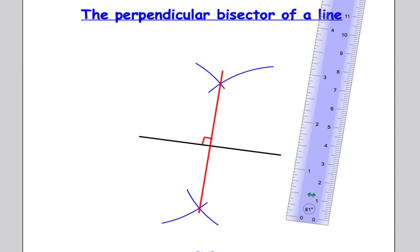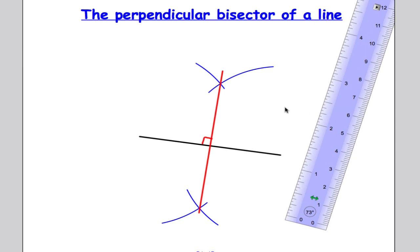And that is how you construct a perpendicular bisector of a line. That's all there is to it. Thanks for watching and we'll see you again sometime. Cheers.